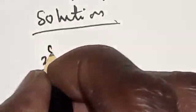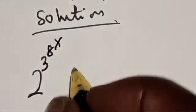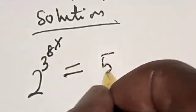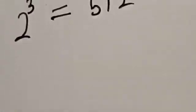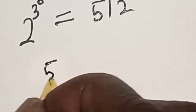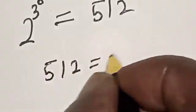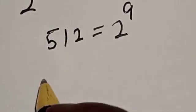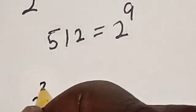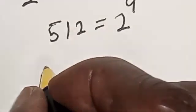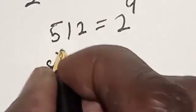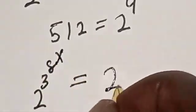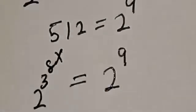We have the given equation: 2 raised to power 3 raised to power 8 raised to power x is equal to 512. But 512 is equal to 2 raised to power 9. Let's substitute — then we have 2 raised to power 3 raised to power 8 raised to power x is equal to 2 raised to power 9.